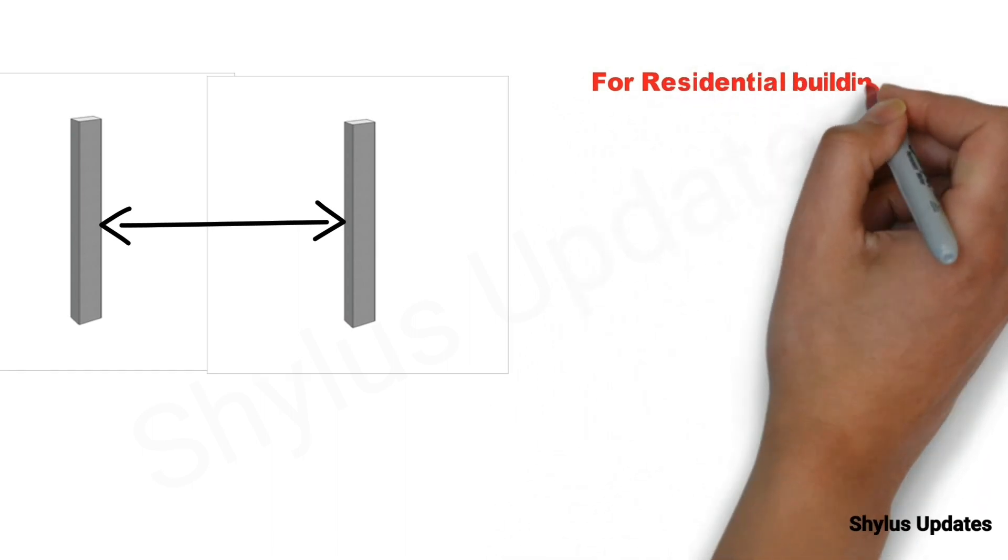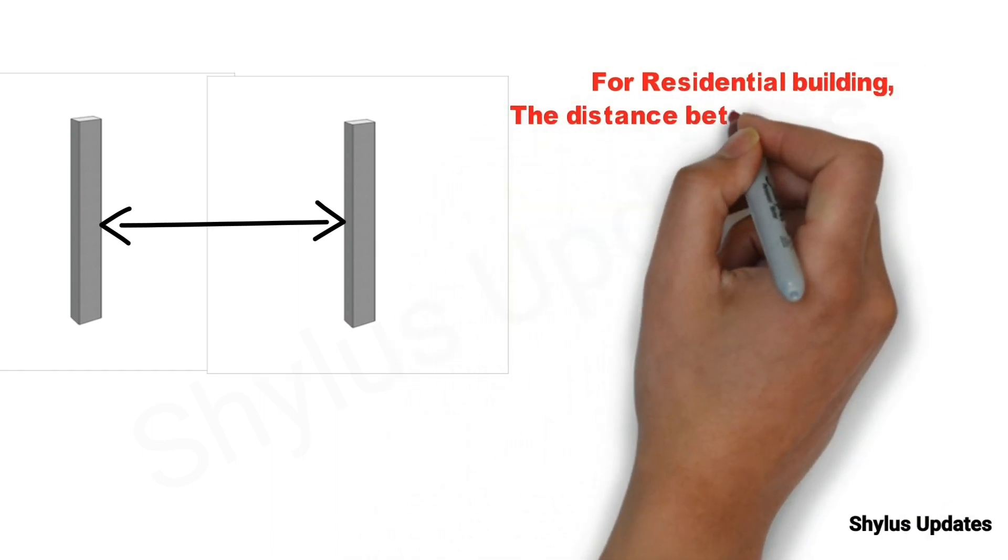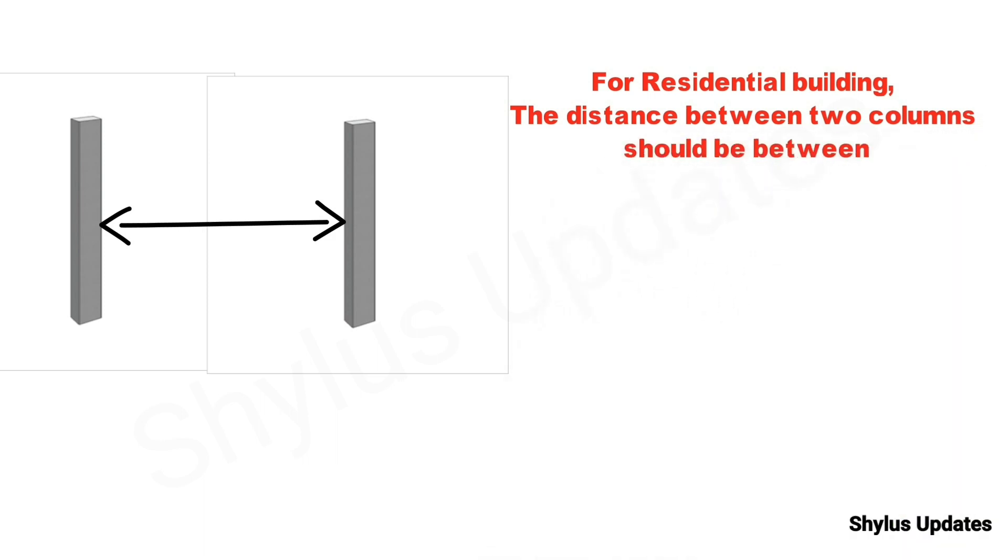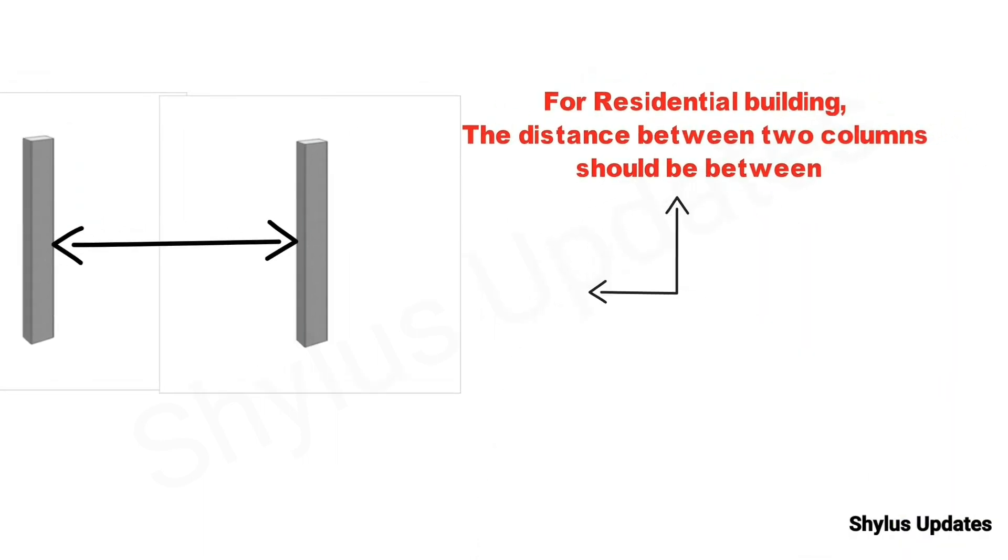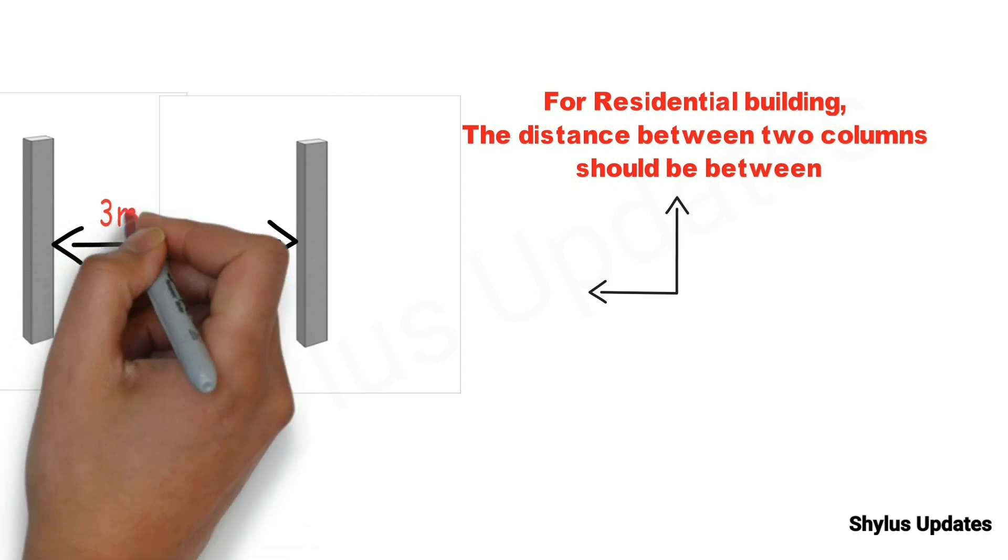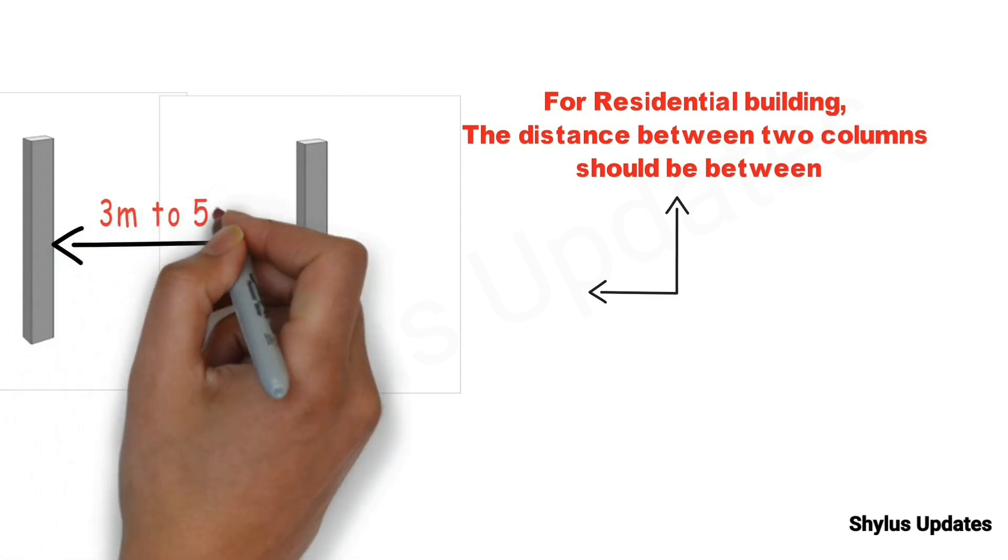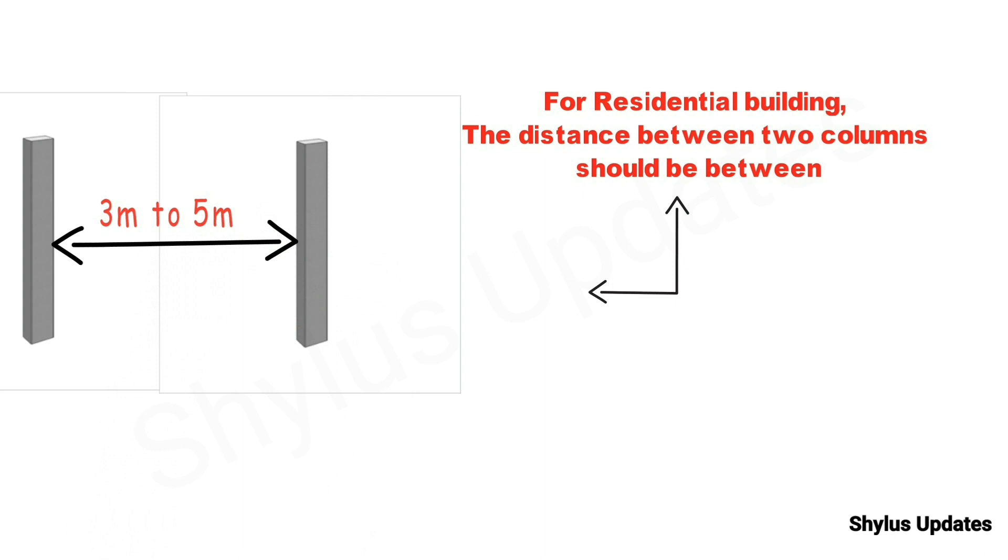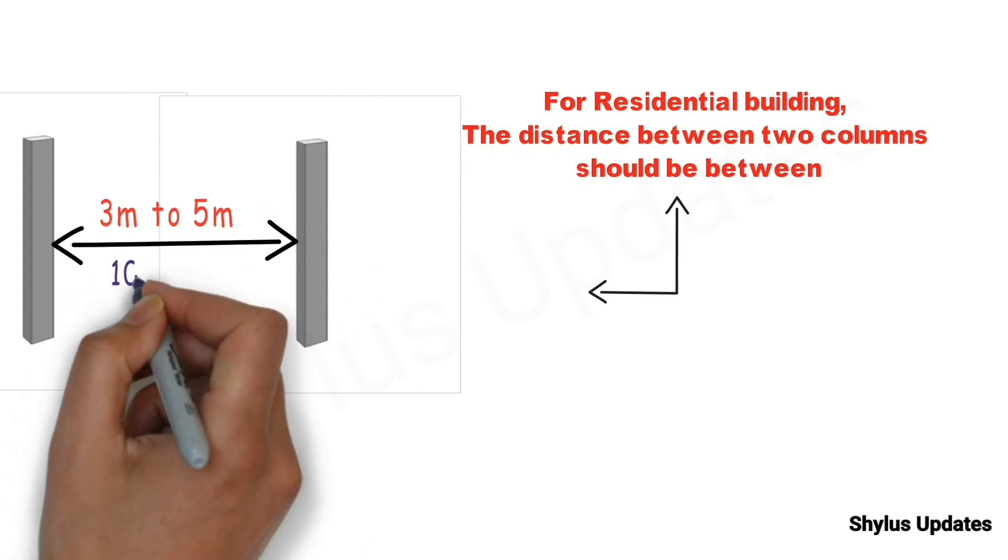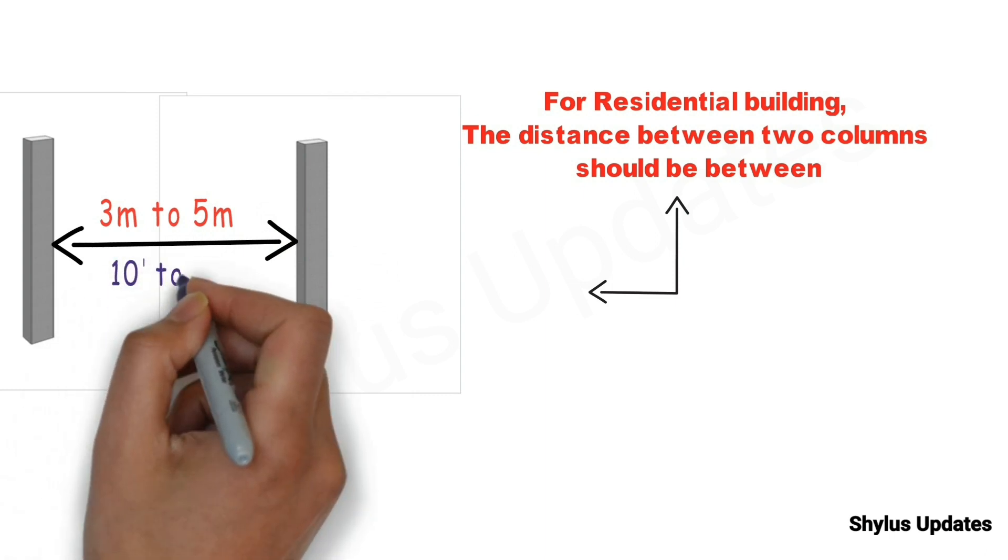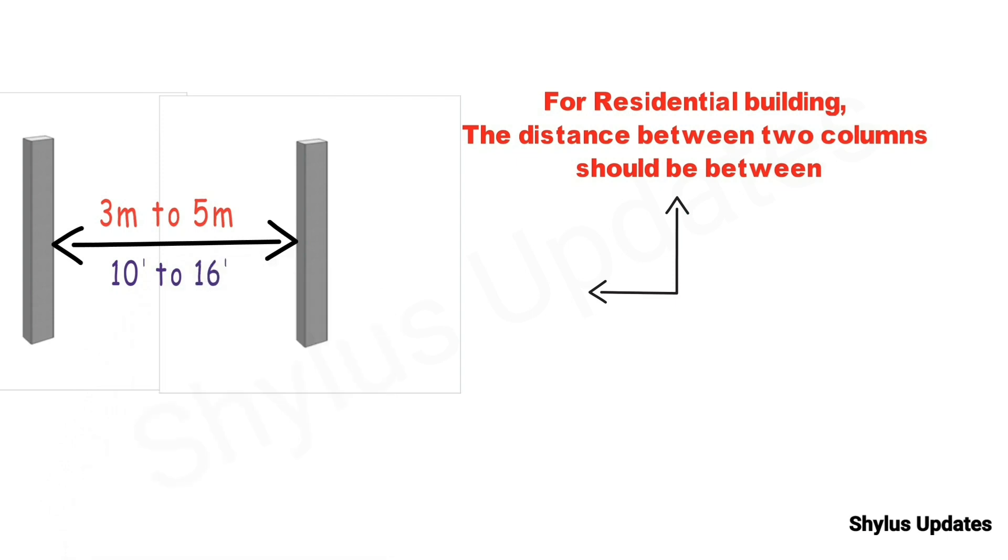Whenever we need to construct a residential building, the distance between two columns should be between 3 meter to 5 meter or 10 feet to 16 feet. This distance can also be increased in case of high-rise buildings by executing post-tensioning method.